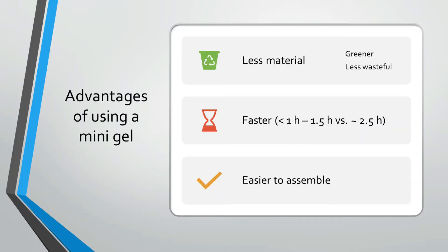Less material is needed to cast the minigel, requiring only one-eighth of the volume of PAGE solution that is used for larger gels. This makes using a minigel a much greener approach and also simply saves material. Also, it is significantly faster to run a minigel compared to a large one, taking between less than an hour to around an hour and a half, compared to about two and a half hours for larger gels.